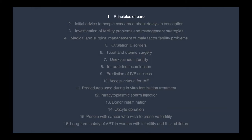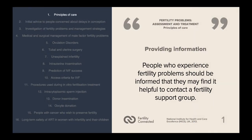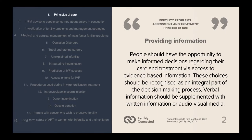The first chapter explores the principles of care, which includes providing information for the patient. People who experience fertility problems should be informed that they may find it helpful to contact a fertility support group, and people should have the opportunity to make informed decisions regarding their care and treatment via access to evidence-based information. These choices should be recognized as an integral part of the decision-making process.